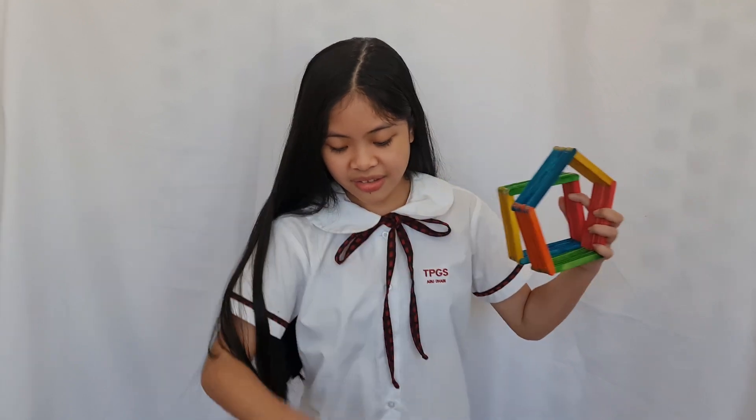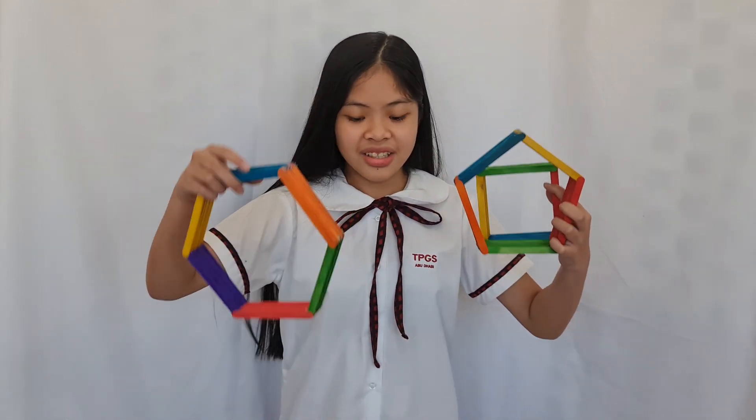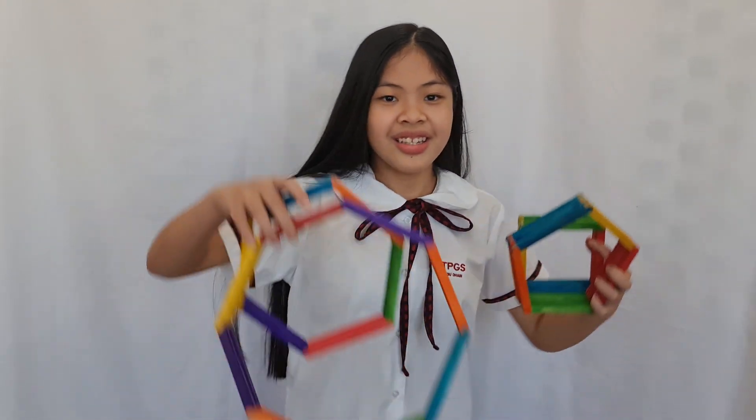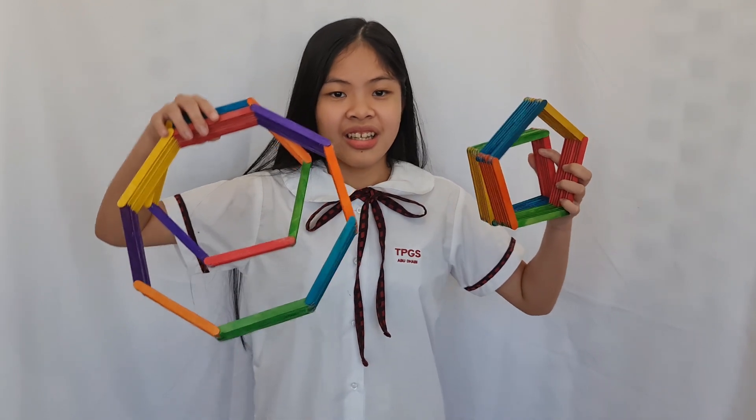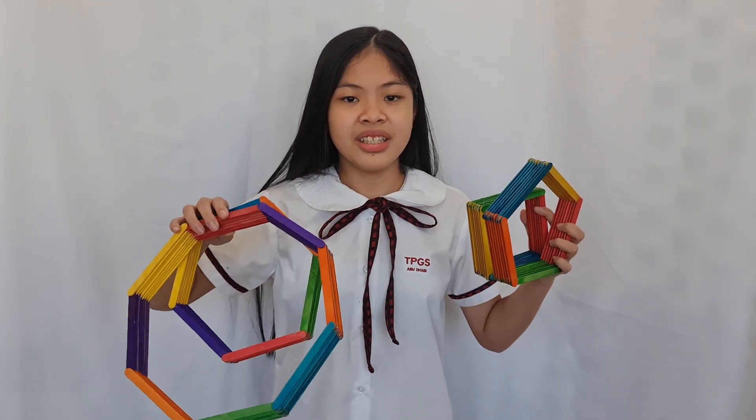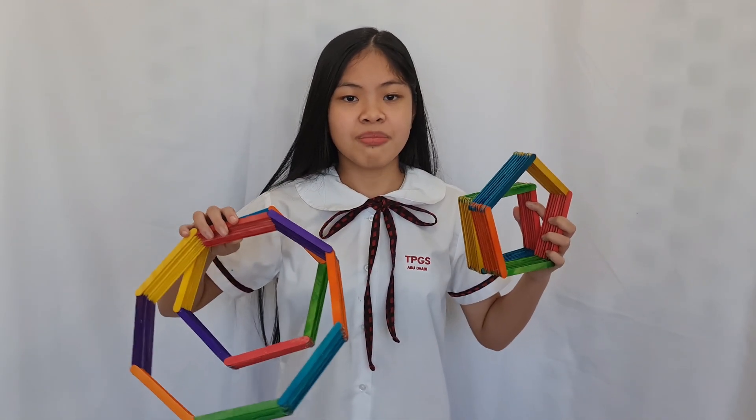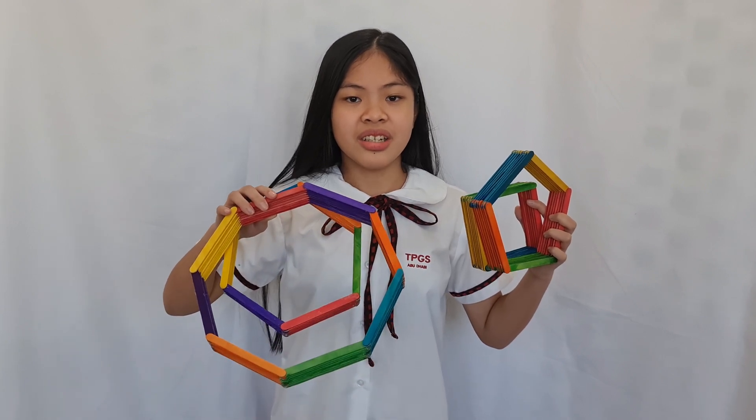What we have here is a quadrilateral, pentagon, hexagon, and an octagon. The materials we use to make these 3D models are popsicle sticks and a glue gun.